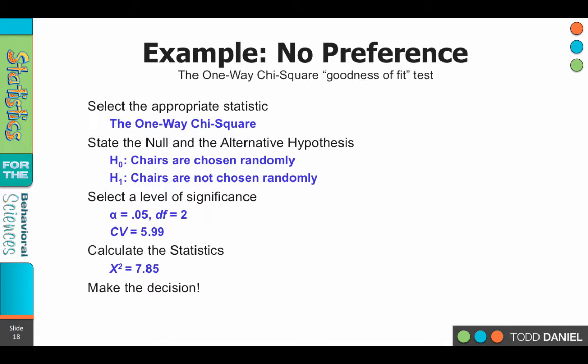Is 7.85 over the fence, further away, in the critical region? And the answer is, yes.